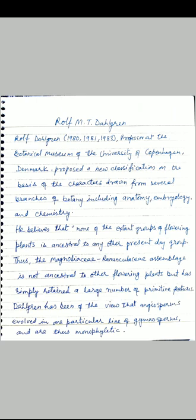One more modern system of classification was given by Dahlgren. Rolf M. T. Dahlgren (1980, 1981, 1983), Professor at the Botanical Museum of the University of Copenhagen, Denmark, proposed a new classification on the basis of characters drawn from several branches of botany, including anatomy, embryology and chemistry. He believes that none of the extant groups of flowering plants is ancestral to any other present-day group.